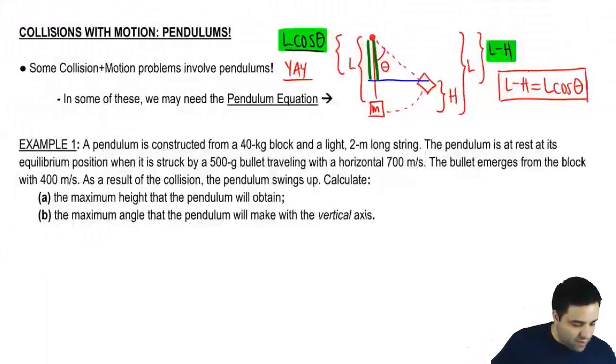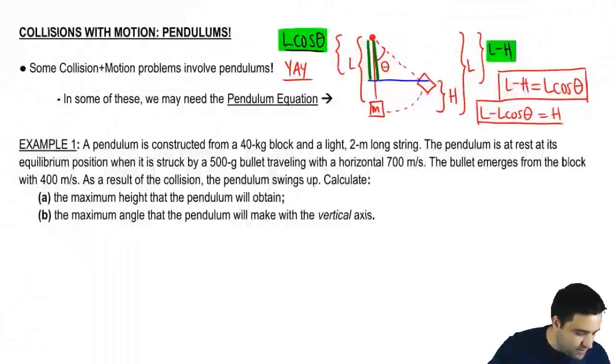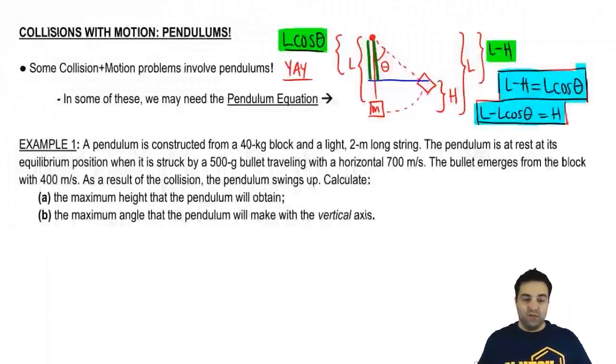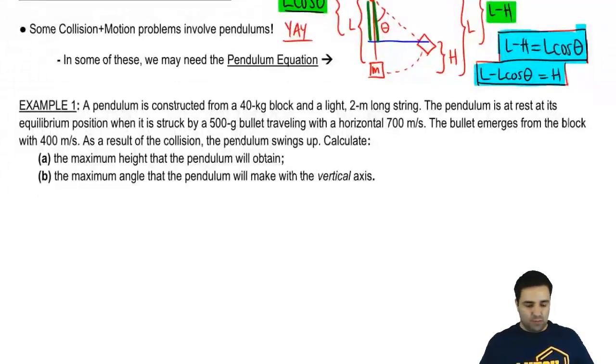This equation can be written in different ways. I'm going to write it where we have the H by itself. I'm going to move it over here so that it becomes a positive. So it's going to be H equals L minus L cosine of theta. Here's another version. It's the same exact thing except just written a little bit different. But it's the same equation. Okay? So that's the pendulum equation you need to know for some of these problems.